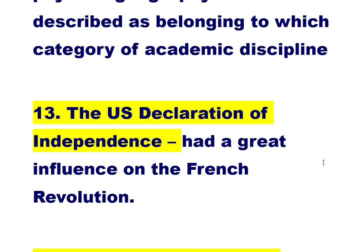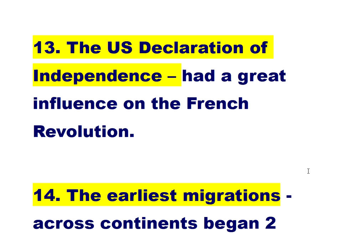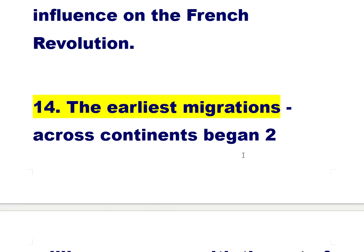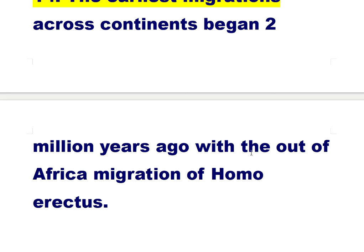Number thirteen: the U.S. Declaration of Independence had a great influence on the French Revolution. Number fourteen — this is the last one: the earliest migration across the continents began two million years ago with the out-of-Africa migration of Homo erectus.